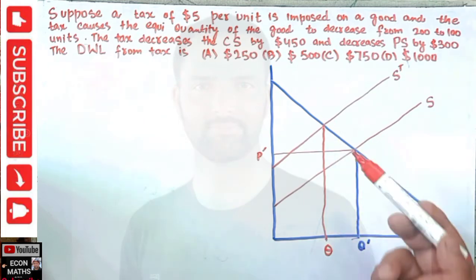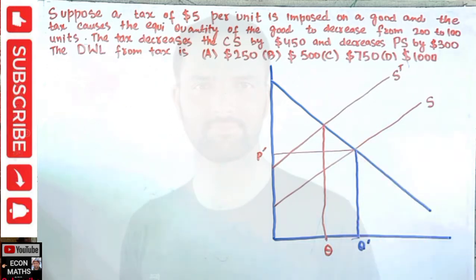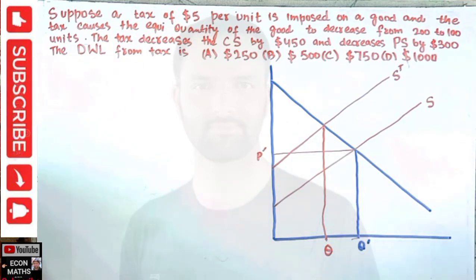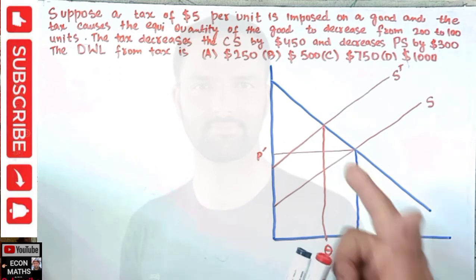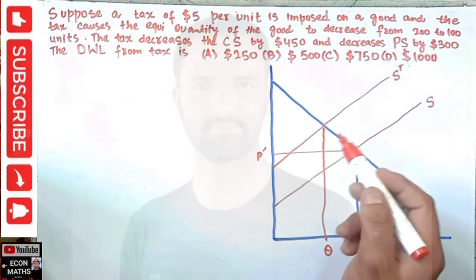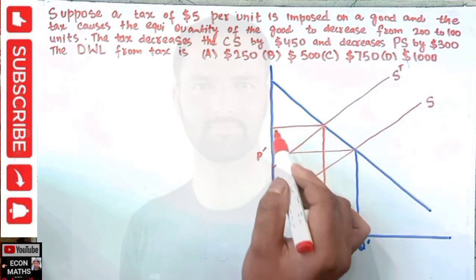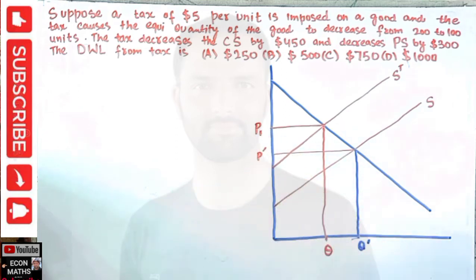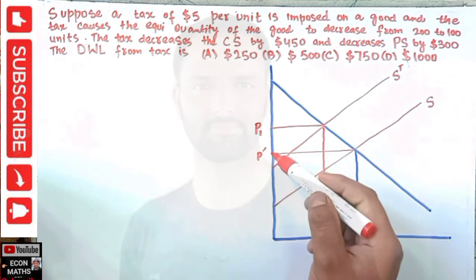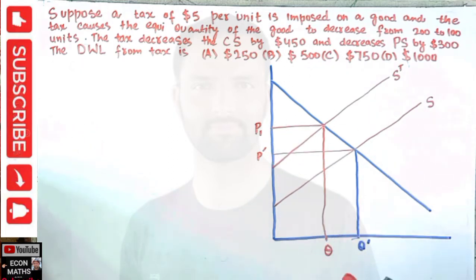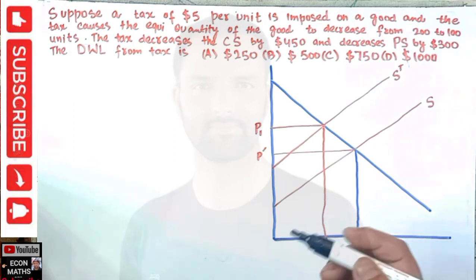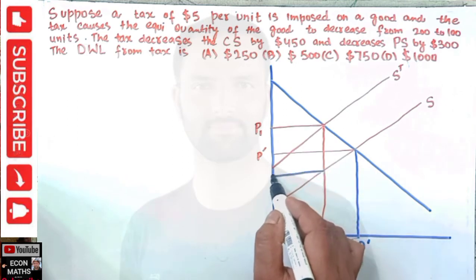Only Q amount of quantity will be supplied by the suppliers because of the imposition of tax, which shifts the supply curve to the left. Consumers' price will increase from P-dash to P1. The price that suppliers will receive decreases to P2.